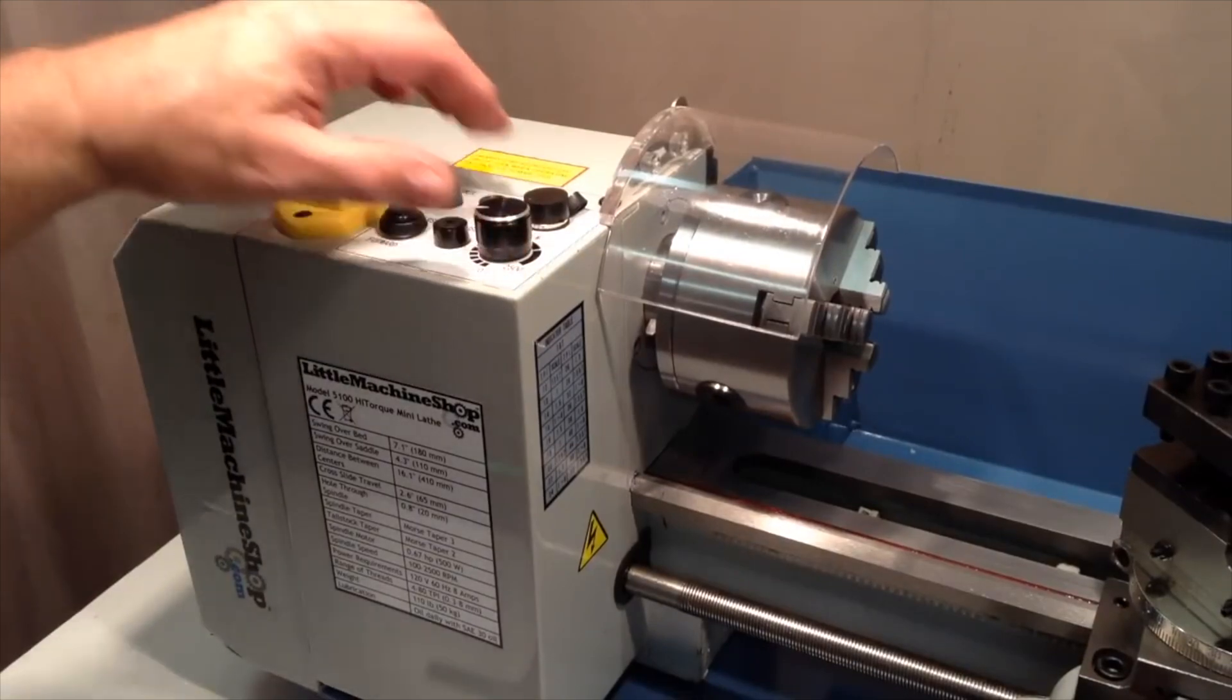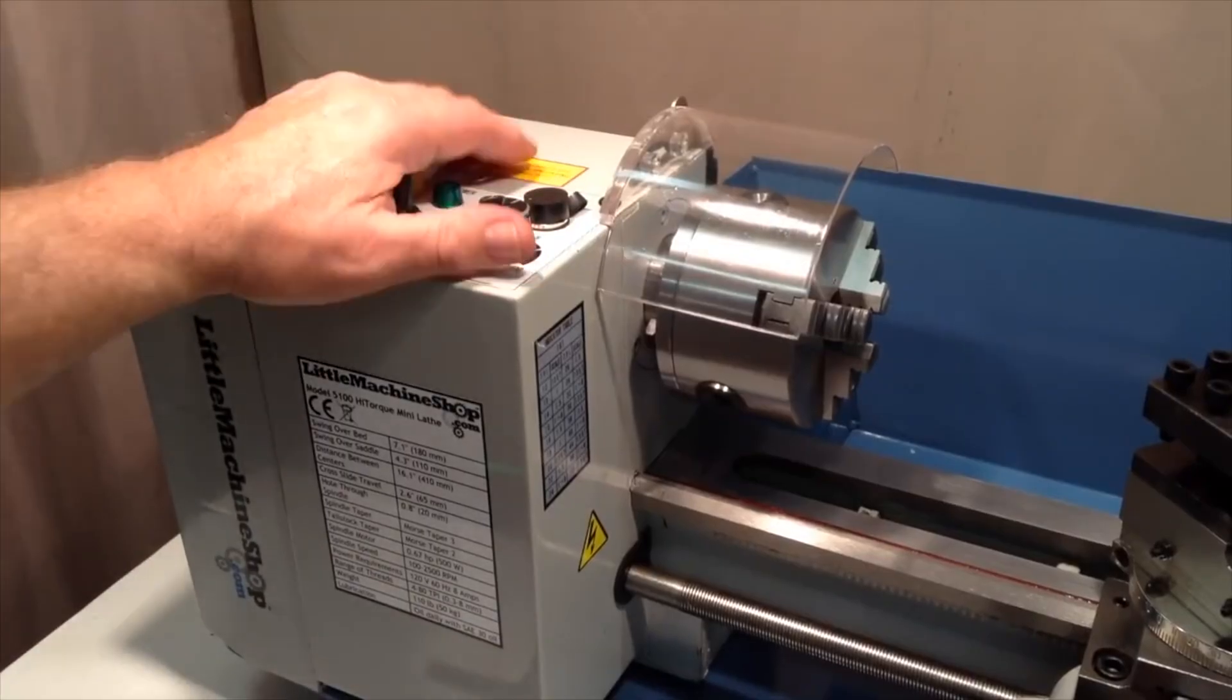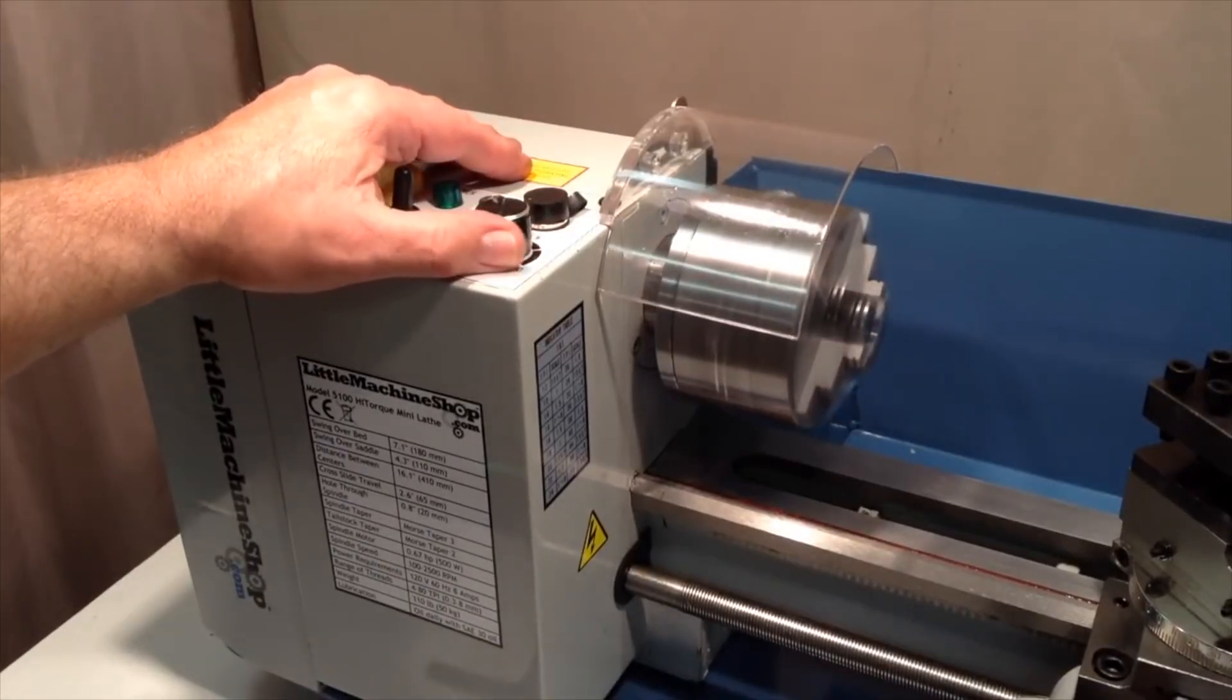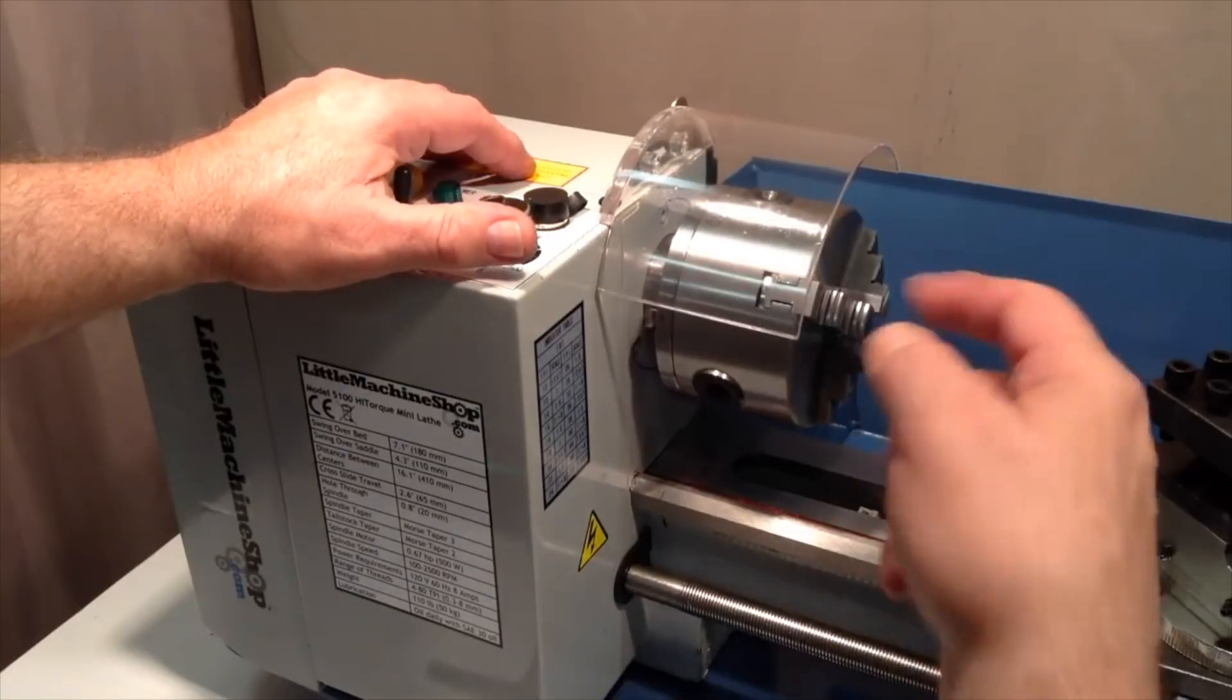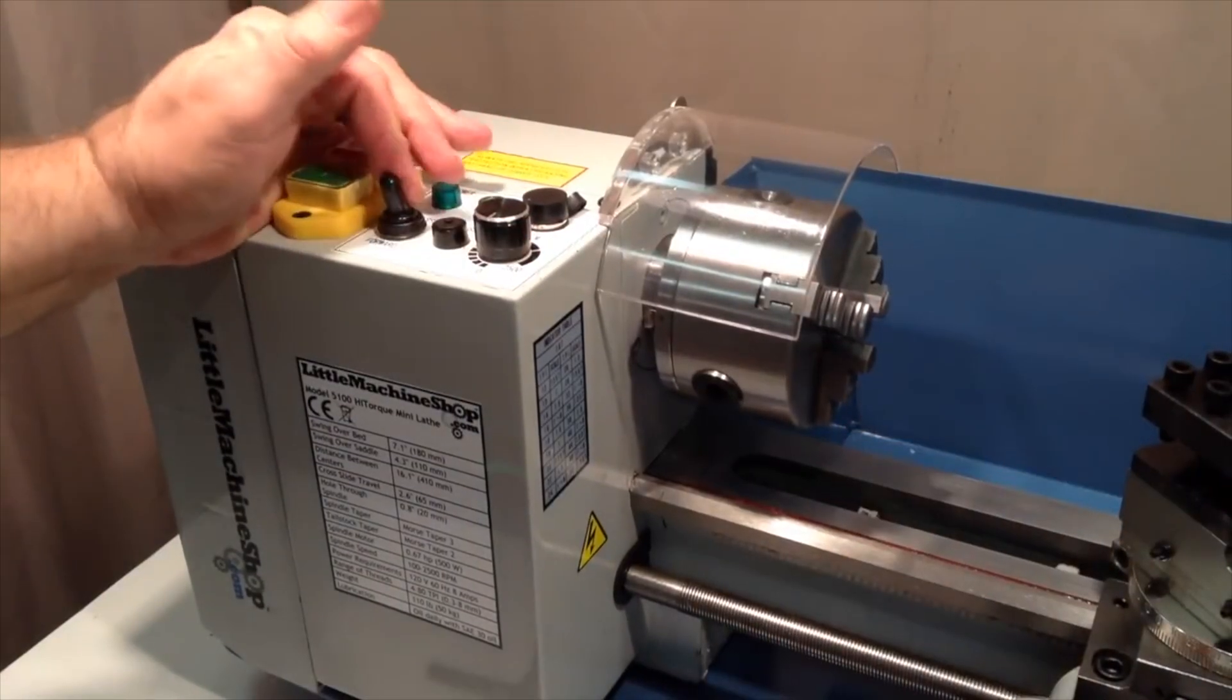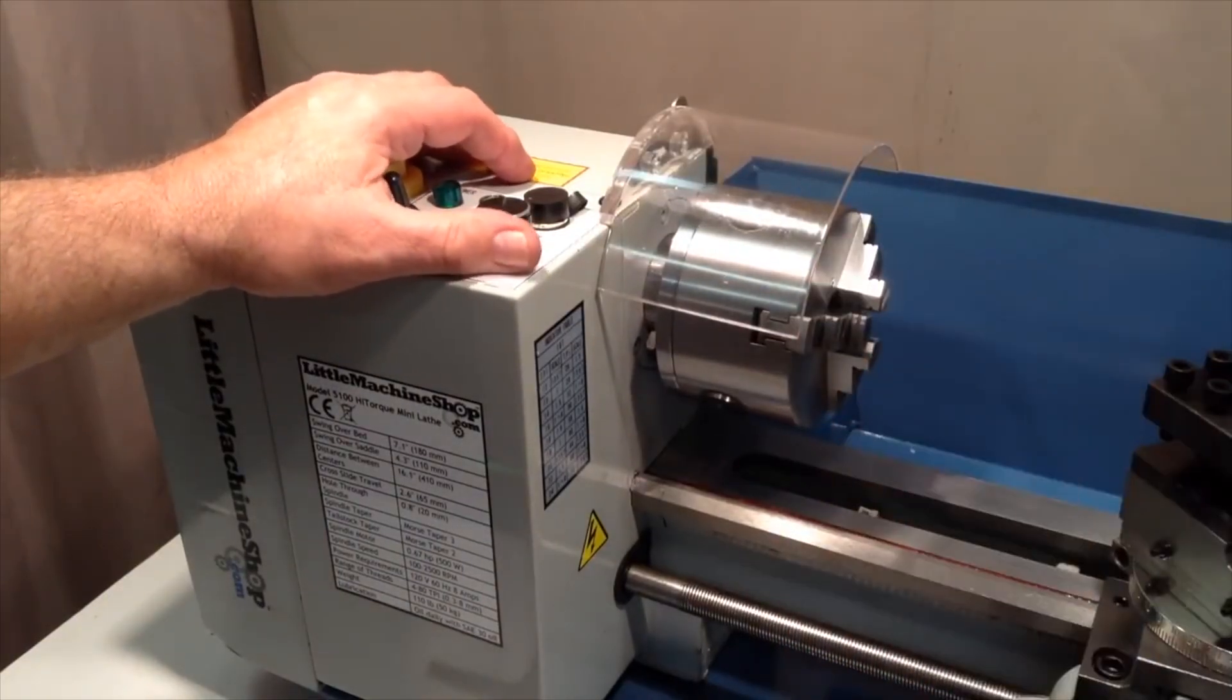And we'll also put it into the reverse position here. Try it in reverse. Got the power on again. Now in reverse, it spins clockwise as looking from the end. And when it's in forward, it spins counterclockwise looking from the tailstock end.